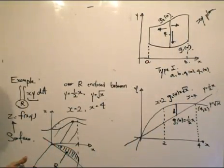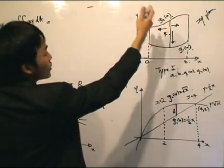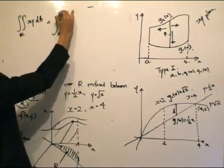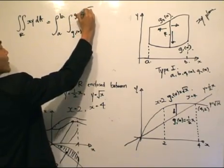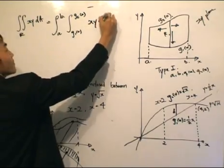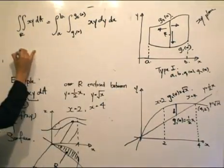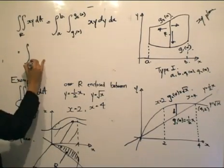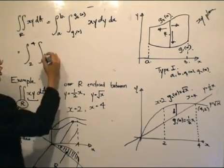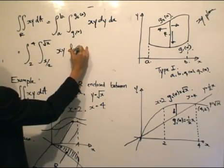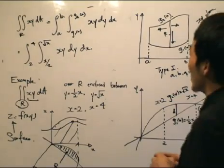Remember the theorem: the double integral of the function over region R equals the iterated integral. We now have G1, G2, A, and B, so bearing in mind this is a type 1 region, we write X from 2 to 4, Y from G1 = X/2 to G2 = √X, and the function stays the same. We integrate first with respect to Y, then with respect to X. Applying the theorem, this is what we need to evaluate using partial integration.